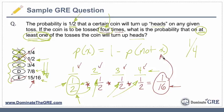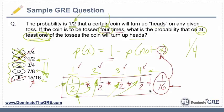That's because we need to use the complement rule. The probability of getting at least one heads is one minus the probability of not-at-least-one heads, which is the same thing as the probability of getting tails four times in a row — tails one-half, tails one-half, tails one-half, tails one-half.